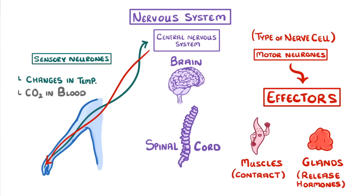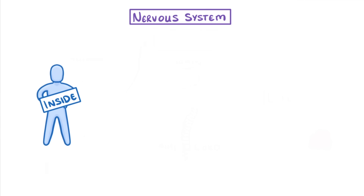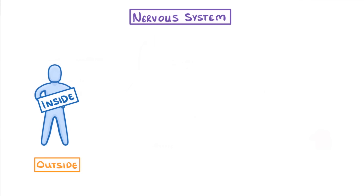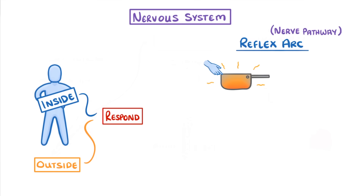All of these parts work together to make a nervous system that can detect changes both inside and outside of our bodies, sort through all of that information, and then respond to it. A special case of all of this in action is the reflex arc, which is a technical term for the nerve pathway that underlies our unconscious reflexes, such as when you instantly move your hand away from a hot pan, or blink when something touches your eye.